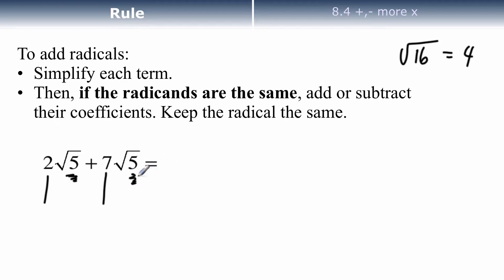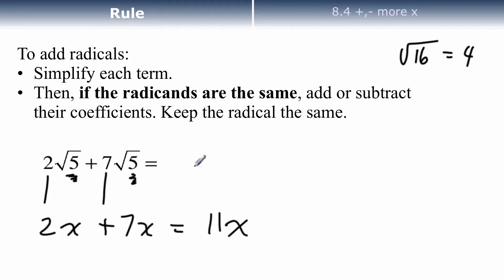For this question here, this would be almost the same as saying 2x plus 7x. If we were adding those, we'd say that's 9x. If we're adding these radicals, 2 plus 7 would be 9, and we'd keep the radical the same. So the answer to that would be 9 root 5.